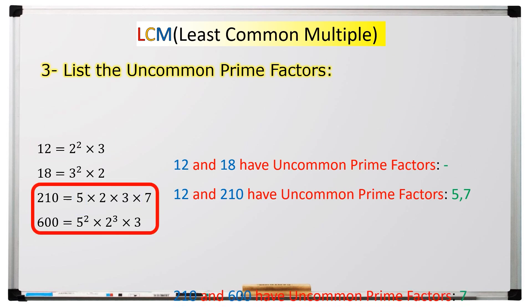If you pay attention, two hundred ten has seven, which is not present in the prime factorization of six hundred.